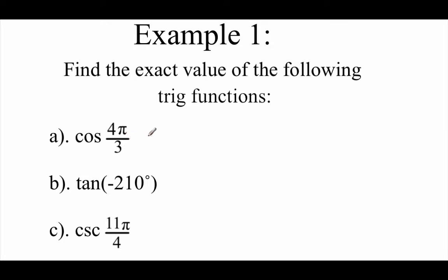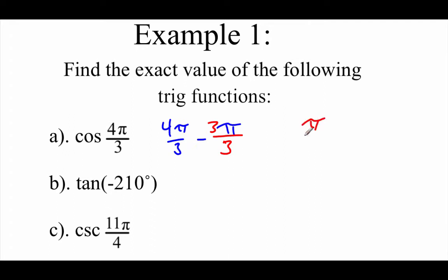it's a little bit bigger than π, so in order to find the reference angle, we're going to take 4π over 3 and subtract off π. We're going to need common denominators, so I'm going to make this 3π over 3. If we carry out that subtraction, we end up with π over 3, so we're going to do the cosine of π over 3.